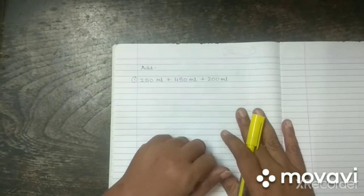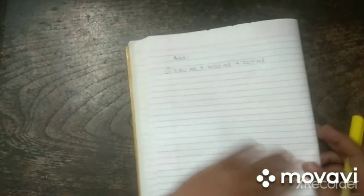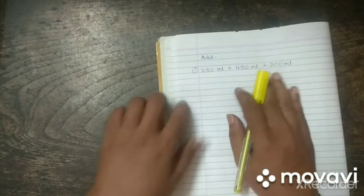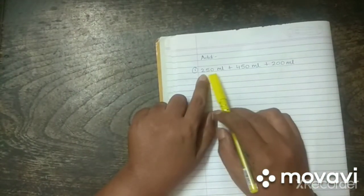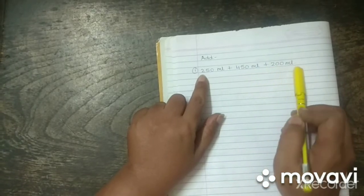Hello. Now, addition. Addition of liters and milliliters. Here, I have written a sum. 250 ml plus 450 ml plus 200 ml.